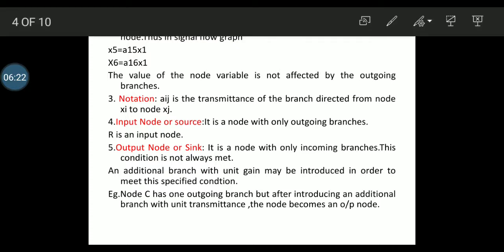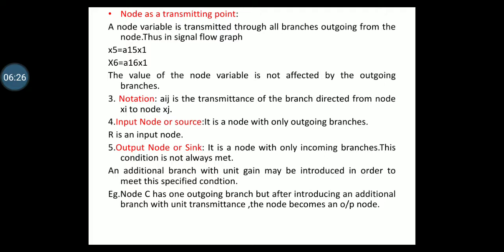Output node or sink: it is a node with only incoming branches. This condition is not always met. An additional branch with unit gain may be introduced to satisfy this condition. For example, node C has one outgoing branch, but after introducing an additional branch with unit transmittance, the node becomes an output node.